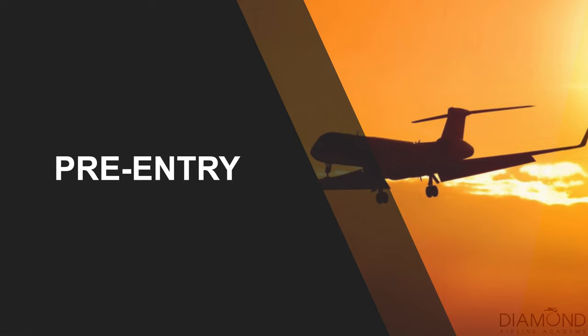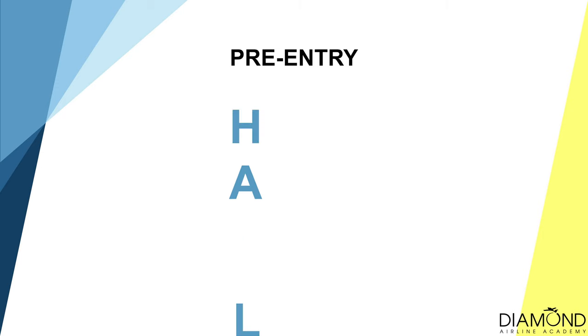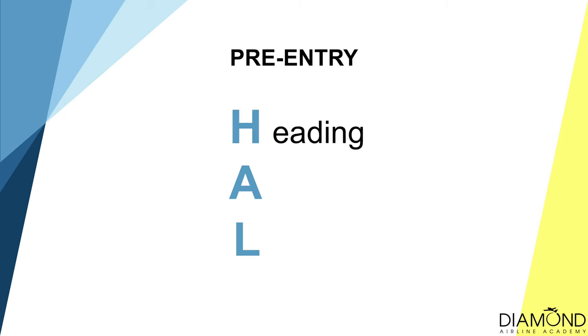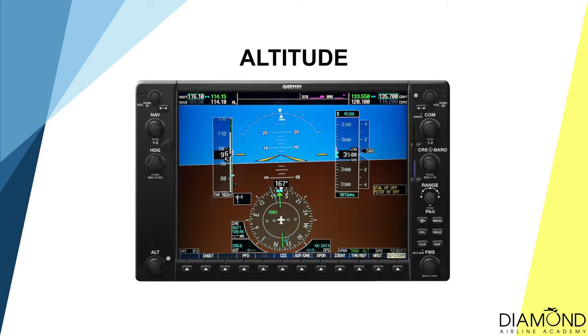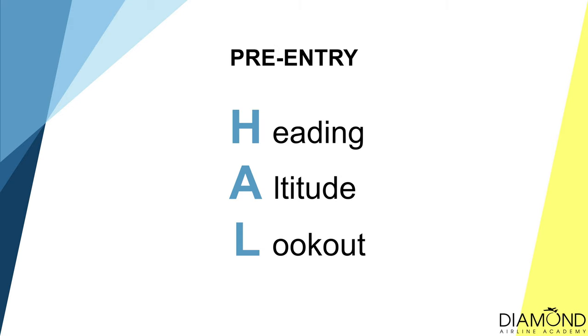After covering the theory behind climbing and descending turns, it's now time for the work cycles. Starting with the pre-entry work cycle: H, A, L. H is Heading — set the heading bug for the heading we want to turn to. A is Altitude — set the altitude bug for the nominated altitude. L is Lookout — clearing the airspace in front of us before the start of the manoeuvre.